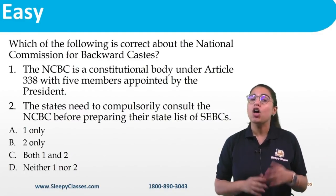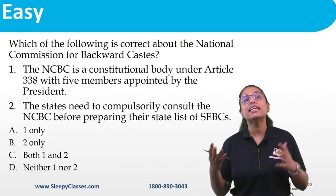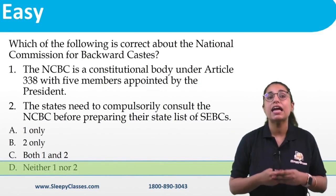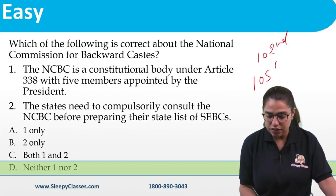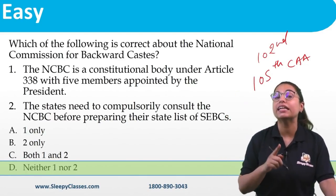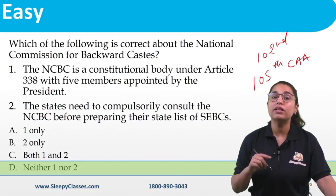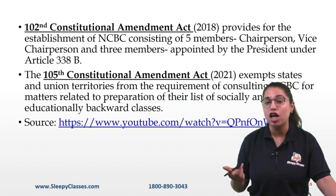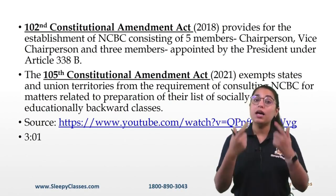The first polity question is about NCBC (National Commission for Backward Classes) — an easy to factual question that has been very much in the news. Both statements given were incorrect. NCBC is under Article 338B, not Article 338 (which is NCSC). The 105th Constitutional Amendment Act amended Article 338 Sub-clause 9, allowing states to prepare their own SEBC lists without consulting NCBC. This question was taken from the 2-minute series.